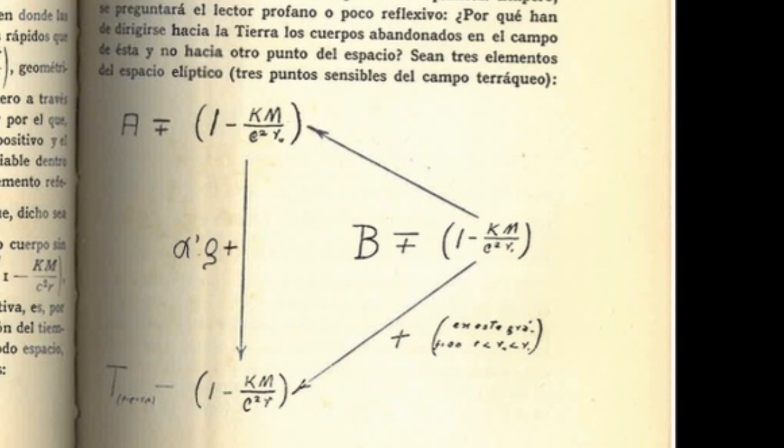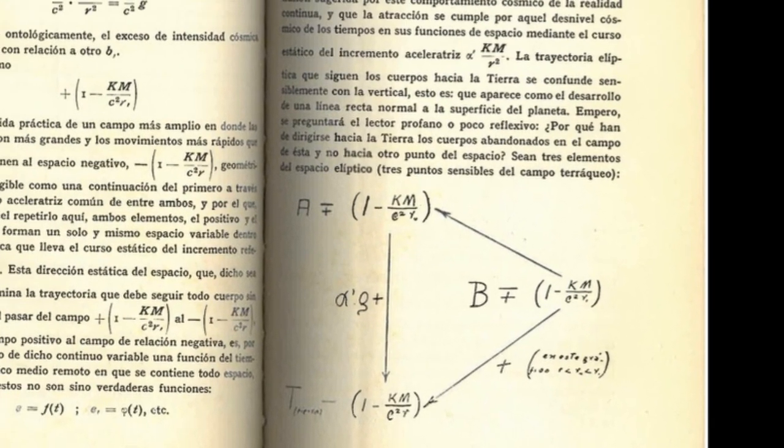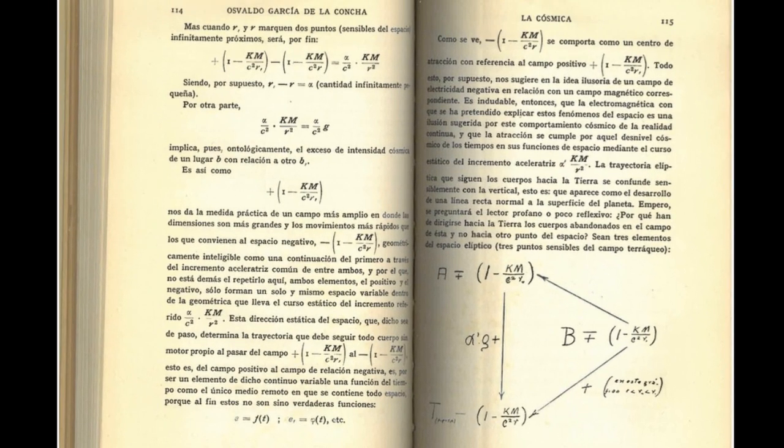Let there be three elements of the elliptical space, three sensitive points of the terrestrial field. It is that every point or place B of the continuum is an element relative to earth and to place A of the variable space contained, and will always mark a less dense sensible point or element in relation to A and T.